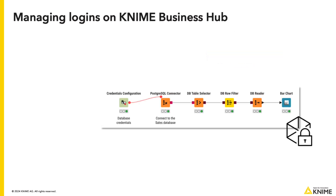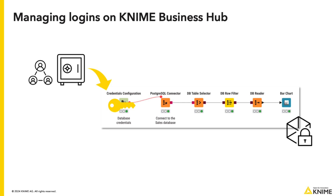Once you upload the workflow to KNIME Business Hub, it might be visible to others, for example, to team members with access to the space. If your workflow uses your private credentials, you might then need an additional layer of security on top of the password encryption provided by the credentials configuration node. On the other hand, if your workflow uses credentials shared with multiple team members, it might be useful to store them in a central location for the team members to have access to the up-to-date credentials.